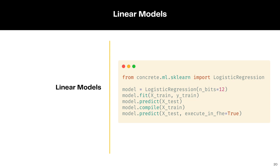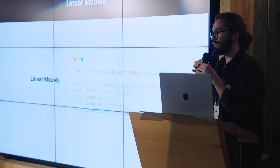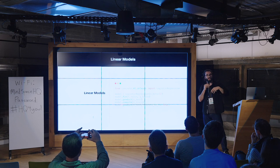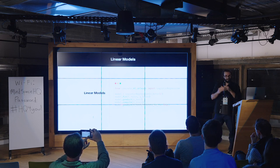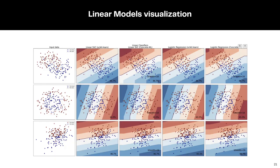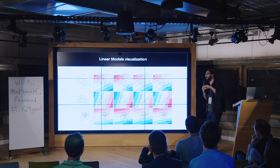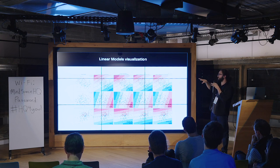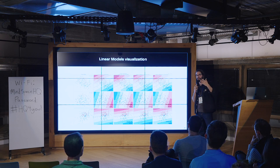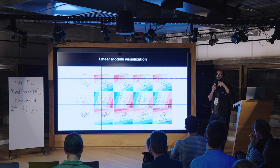For linear models, the APIs are the same and easy to use. We have more flexibility because since there are no nonlinearities, we don't need table lookups and can increase the bit width a bit more. Comparing scikit-learn models on floating-point values with Concrete ML, you can see small quantization artifacts on the decision surface, but they are really small and mainly occur outside the support of the data — which isn't much of an issue since you're usually interpolating, not extrapolating.